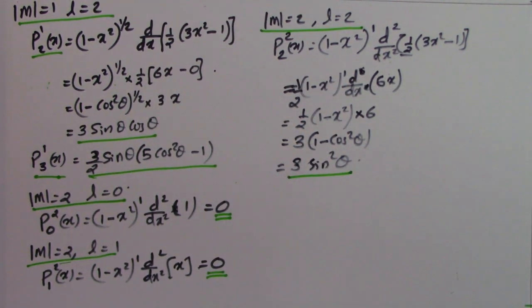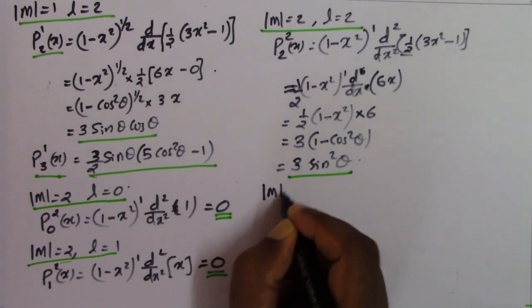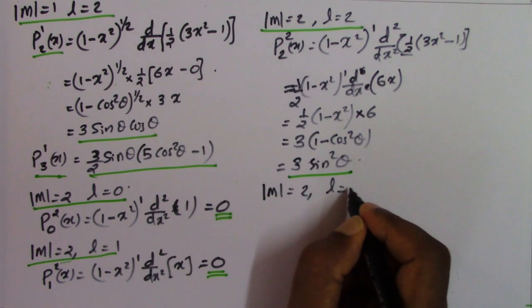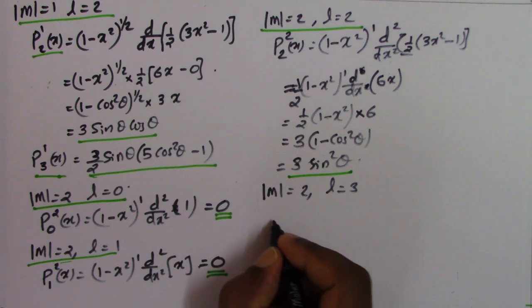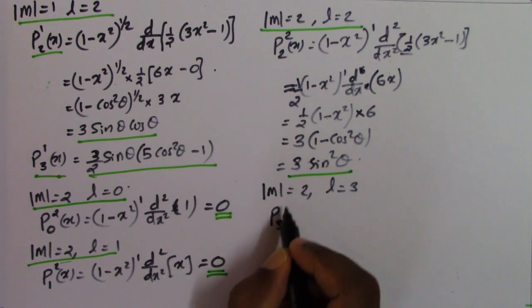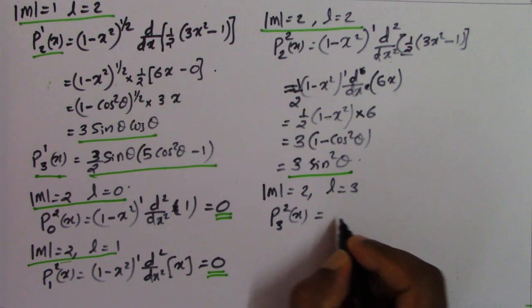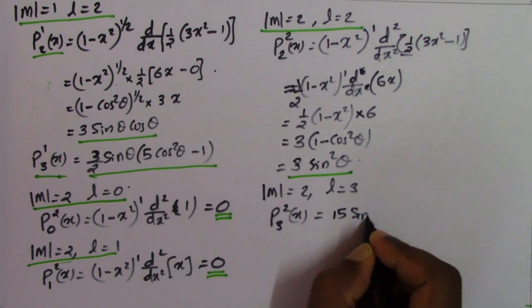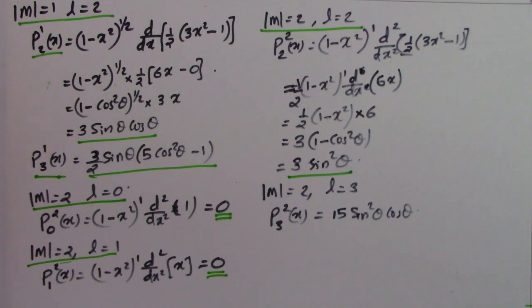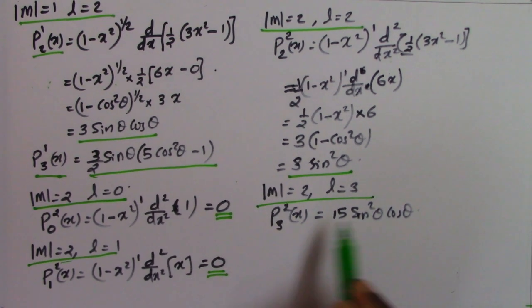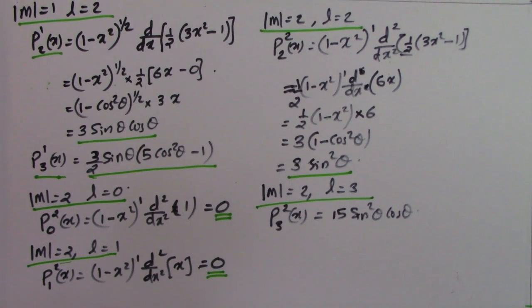Similarly, you can calculate P_3^2(x) for m=2 and l=3. In that case P_3^2(x) = 15sin²θ·cosθ. You can prove this yourself. So we have found various values of the associated Legendre polynomial.